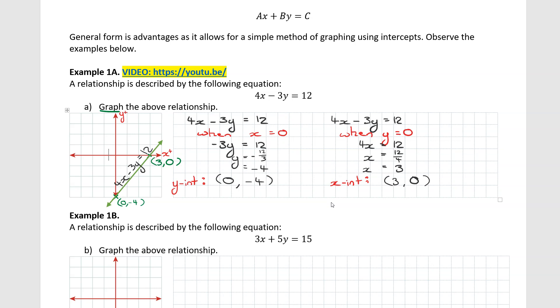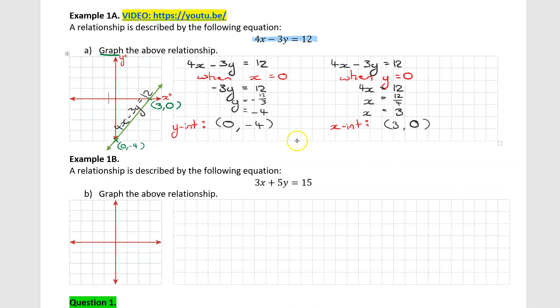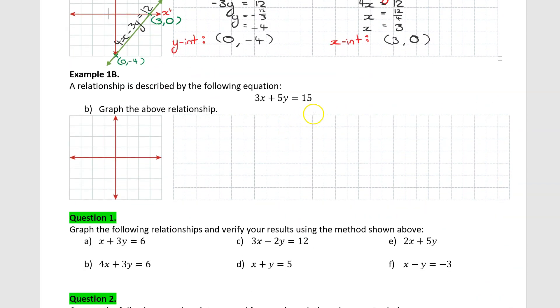So that's been the first example of how we can graph a linear relationship that is described in the general form. Now let's do another example. Nothing special about the other one, but it's always good to get a little bit of repetition to build the fluency.